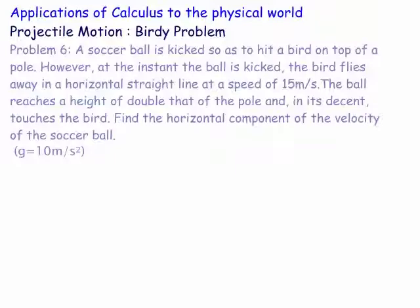This one is actually flying horizontally at a speed of 15 metres a second. We may look at one where the bird flies at an angle off the top of the pole, but basically the soccer ball is kicked so that you're aiming at the bird at the top of the pole. As you kick the ball the bird flies off, and it reaches double the height of the pole and in its descent touches the bird.